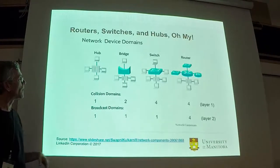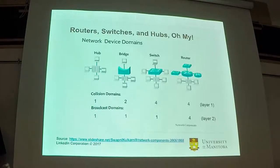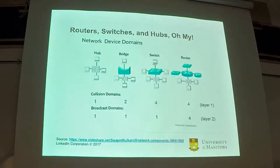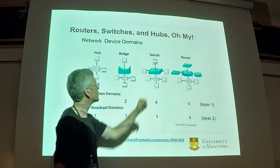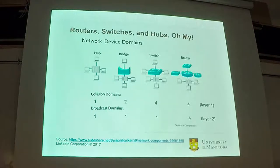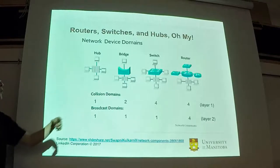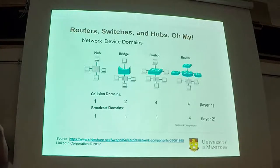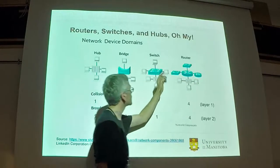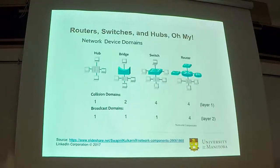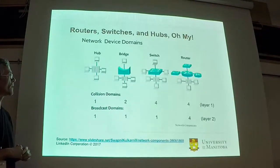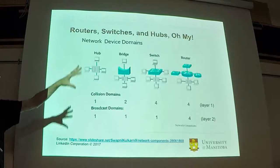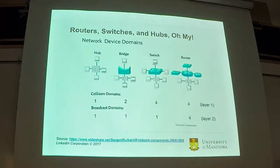A switch is essentially the same concept as a bridge but multi-port. Every connection directly to the switch will be its own collision domain — so four ports means four collision domains — but they're still all one broadcast domain. If you use a router instead of a switch, typically everything is a separate subnet on every port, so not only are there separate collision domains, but also separate broadcast domains.